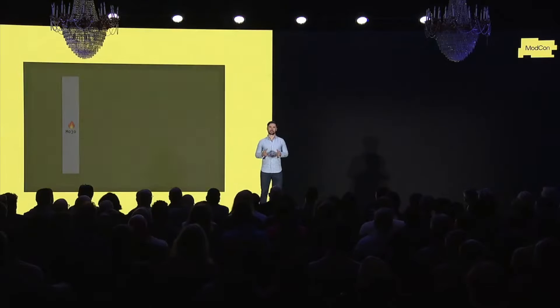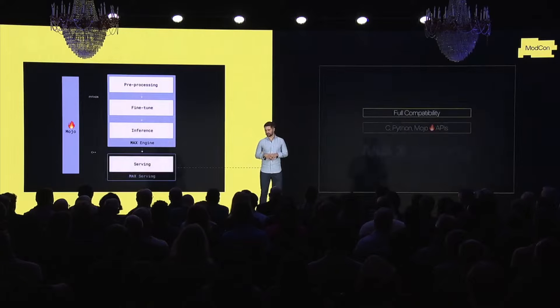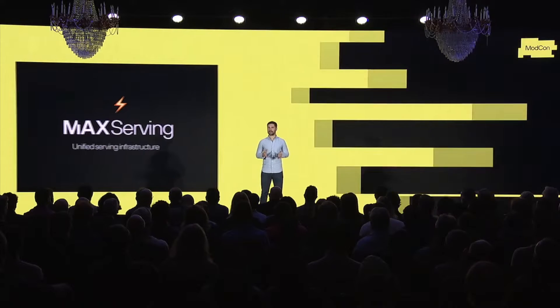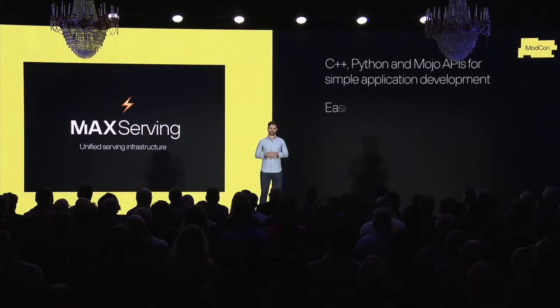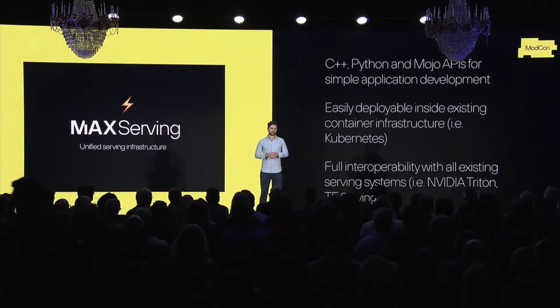In addition to the MAX engine, we also provide highly compatible serving infrastructure. MAX serving is a simple set of APIs that natively integrate with your existing serving stack, making it easy to serve models with the MAX engine. It provides drop-in compatibility with existing inference servers such as NVIDIA Triton, TF serving, and Torch serve. It integrates easily into any existing container orchestration services such as Kubernetes.